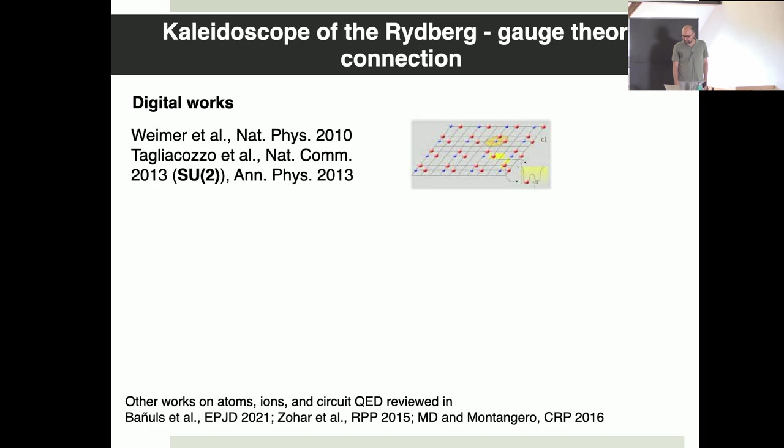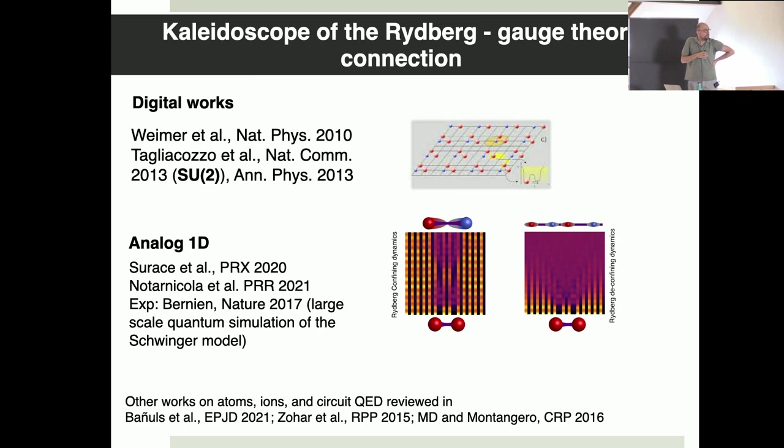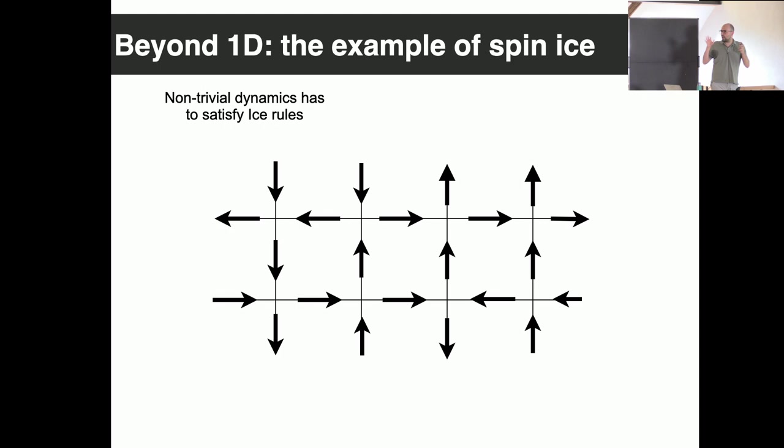What is known about Rydberg and gauge theory before this experiment? There were several works in the early 2010s utilizing digital quantum simulation, particularly by the Lewenstein group. Then there were analog works in one dimension. In Misha's lab, they already observed a pair production out of perturbation of the vacuum. For these scenarios there is already an experimental reality, but we wanted to move away from 1D.